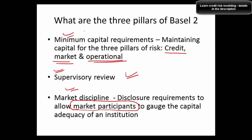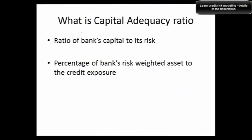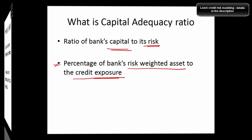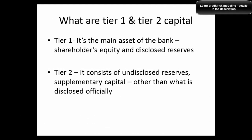These three pillars — market discipline, supervisory review, and minimum capital requirement — can be discussed if asked about the features of Basel 2 in an interview. What is capital adequacy ratio? Briefly, it is the ratio of a bank's capital to its risk. More technically, it is the percentage of a bank's risk-weighted assets (RWA) to the credit exposure — that is basically how you calculate it.